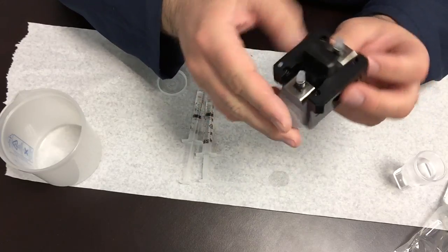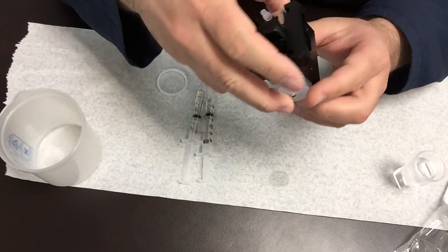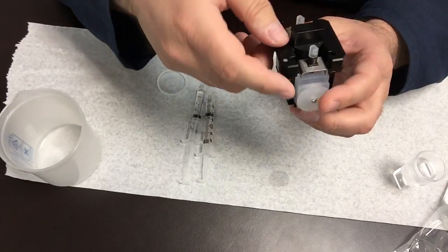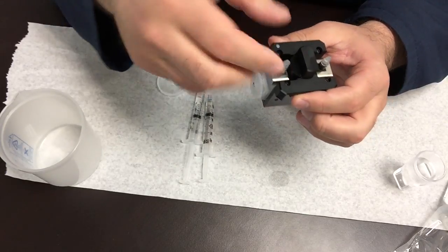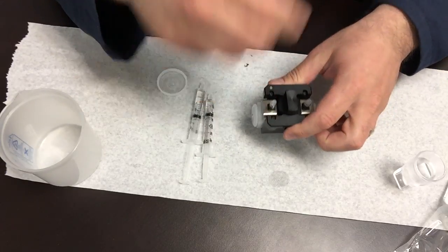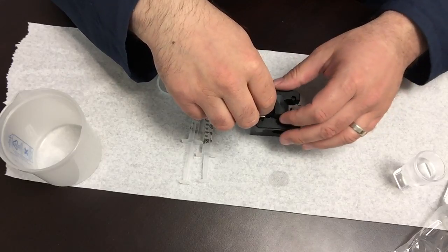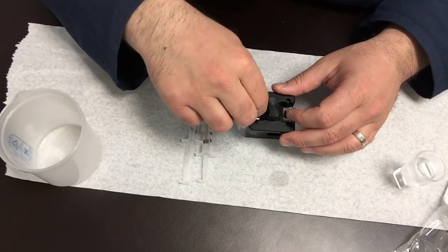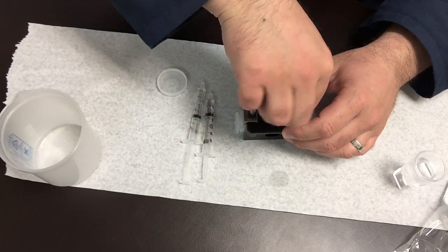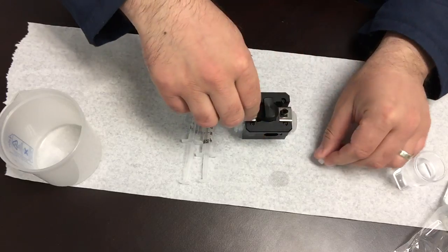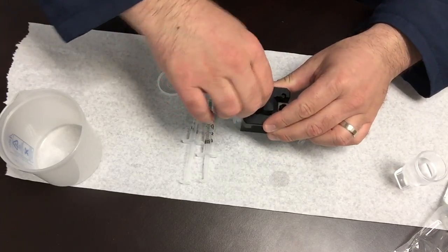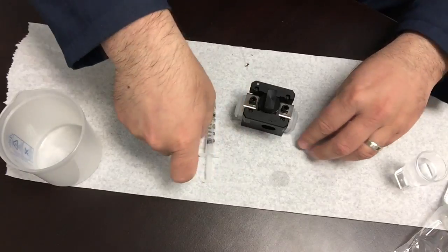And once you place into the instrument and perform the analysis and the analysis is complete, to remove the sample you want to be sure that you always remove the sample. You don't want to leave it sitting in the cell. It could dry up and crystallize and cause issues. So you just want to take the caps off, leave one cap out.